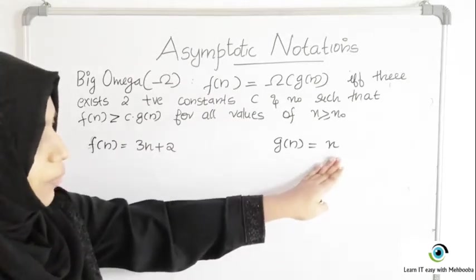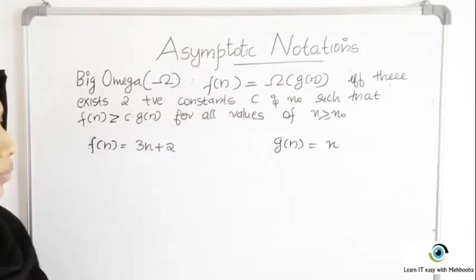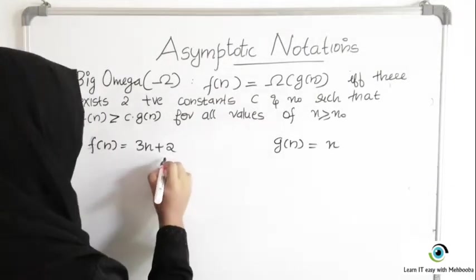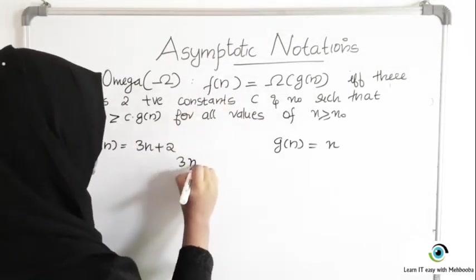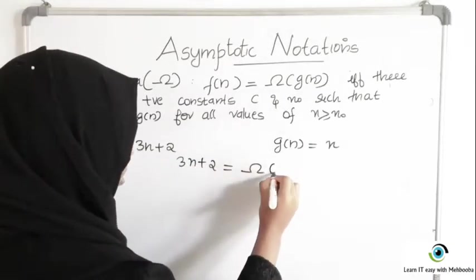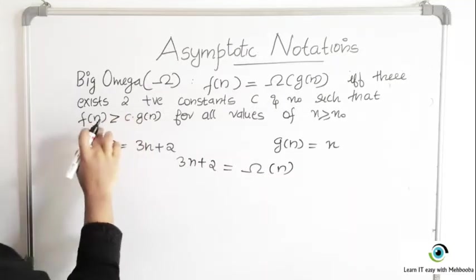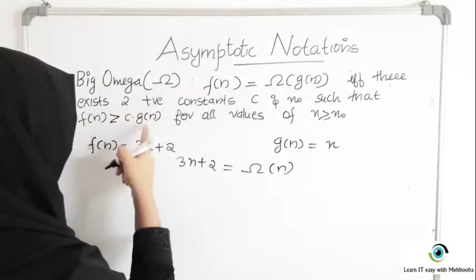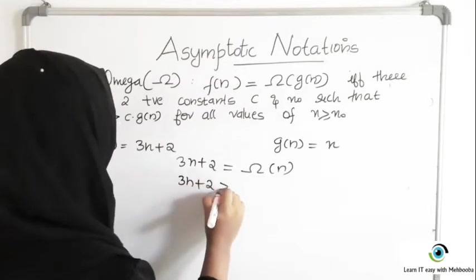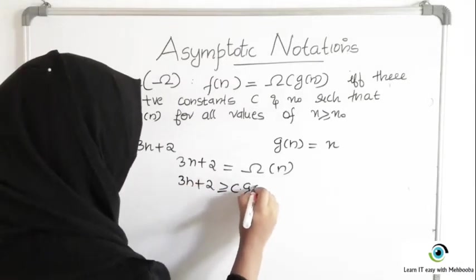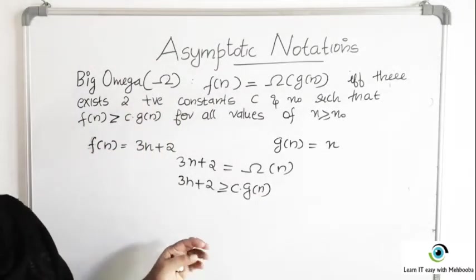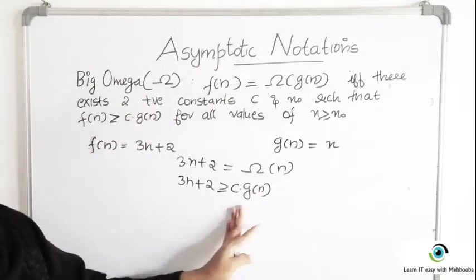G of N is any function of N, so I am taking G of N as N. Now if we want to write that F of N, that is 3N plus 2, is Big Omega of G of N which is N, I want to meet the condition that F of N is greater than or equal to C times G of N. That is, 3N plus 2 greater than or equal to C times G of N, and I have to find two positive constants C and N0 such that this inequality holds.